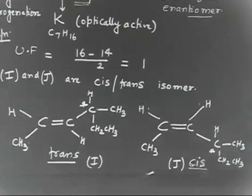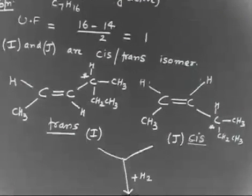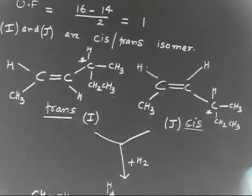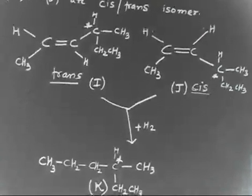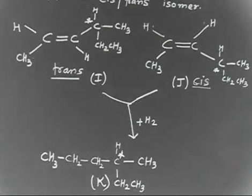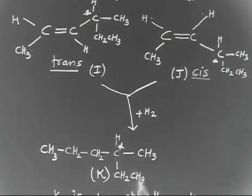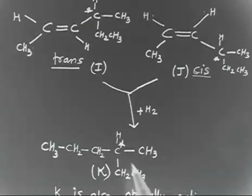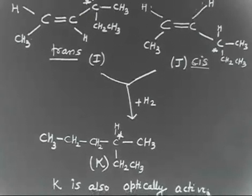Now if I do hydrogenation of these two compounds, things are very simple. I just add hydrogen across the double bond. So this gives K: CH3, CH2CH3, hydrogen — K is still optically active because this side has a different group, this side has a different group, and this side has a different group. So K is still optically active.